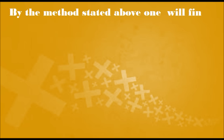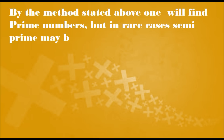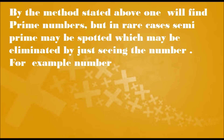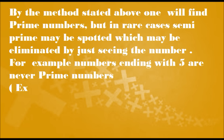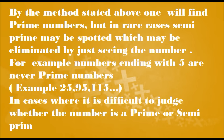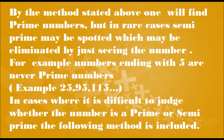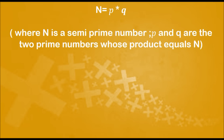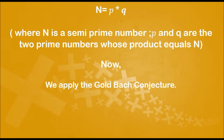By the method stated above one will find prime numbers, but in rare cases a semi-prime may be spotted, which may be eliminated by just inspecting the number. For example, numbers ending with 5 are never prime — such as 25, 95, 115 and so on. In cases where it is difficult to judge whether the number is prime or semi-prime, the following method is applied. n equals p times q, where n is a semi-prime and p and q are distinct prime numbers. We apply the Goldbach conjecture, which states that every even number can be written as the sum of 2 primes.